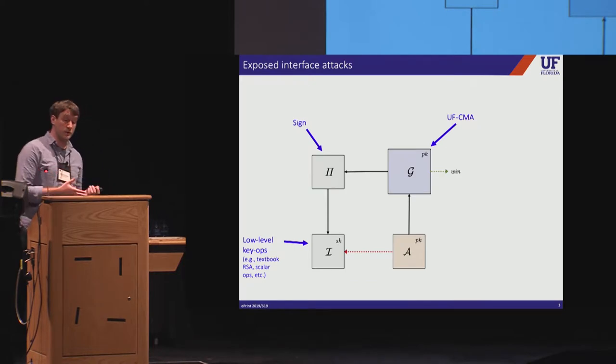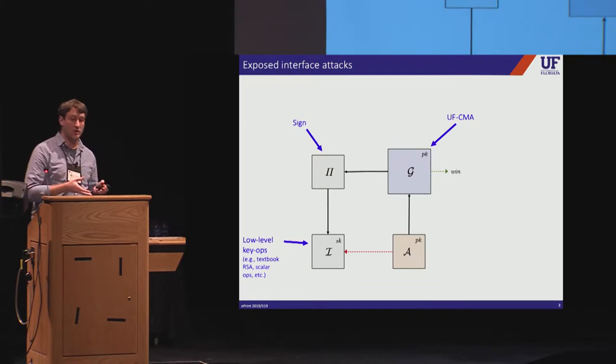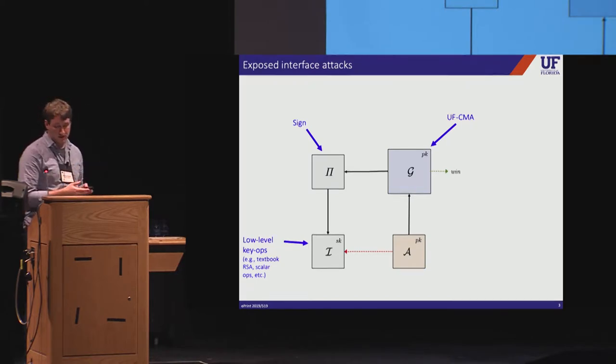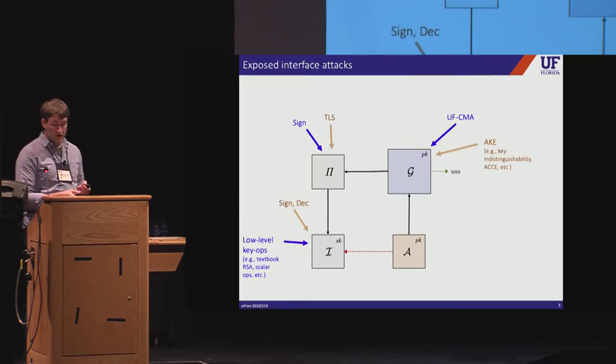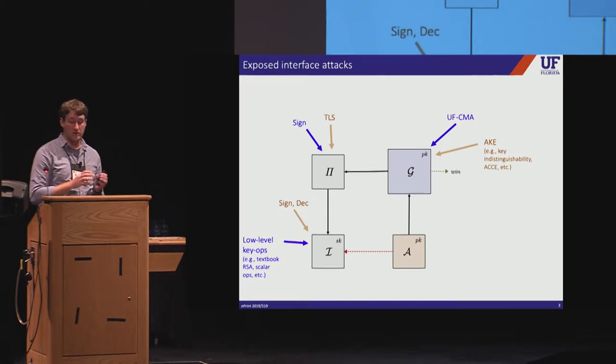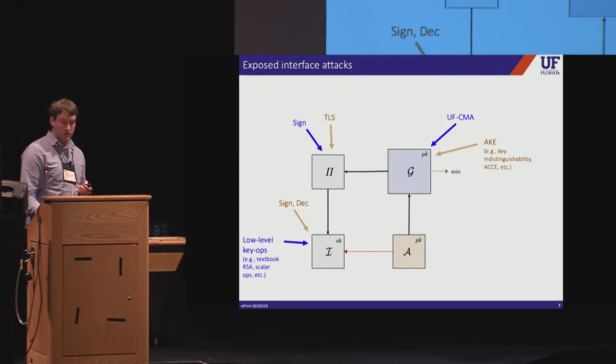So for example, if the game is UF-CMA and the scheme is the signing algorithm, the interface might expose lower level key operations used by the signing algorithm and possibly other systems. So for example, if pi is RSA-PSS, then the interface might expose textbook RSA or something. So on the other hand, the interface might expose higher level primitive operations such as signing and or decryption. The scheme might be a protocol that uses these in some way. And the game might capture the security property intended by this higher level protocol. So the model captures a very broad class of key reuse attacks.